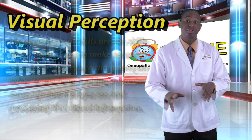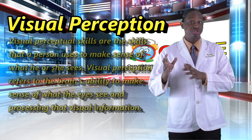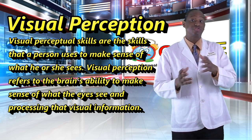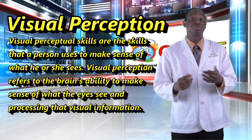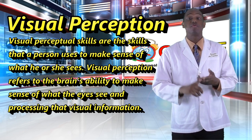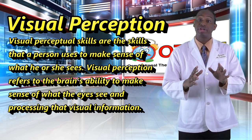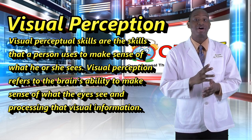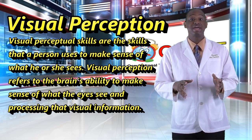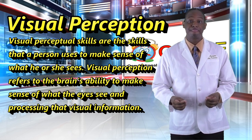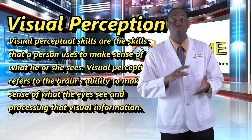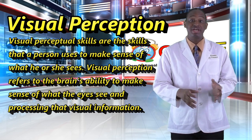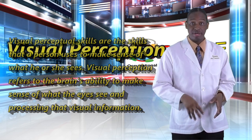Visual perceptual skills are the skills that a person uses to make sense of what he or she sees. Making sense of what you see is vital for school skills such as reading, writing, and math, as well as for life skills such as reading signs and maps, finding objects in a busy space, and taking part in hobbies. Visual perceptual refers to the brain's ability to make sense of what the eyes see and processing that visual information.